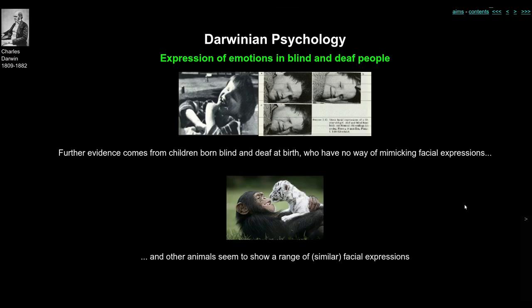Further evidence for the universality of emotional expressions comes from children who are born both blind and deaf. They have no way of copying their parents' or other humans' facial expressions, yet these children display the same facial expressions when they experience emotions. This suggests these expressions cannot be learned — they must be innate.